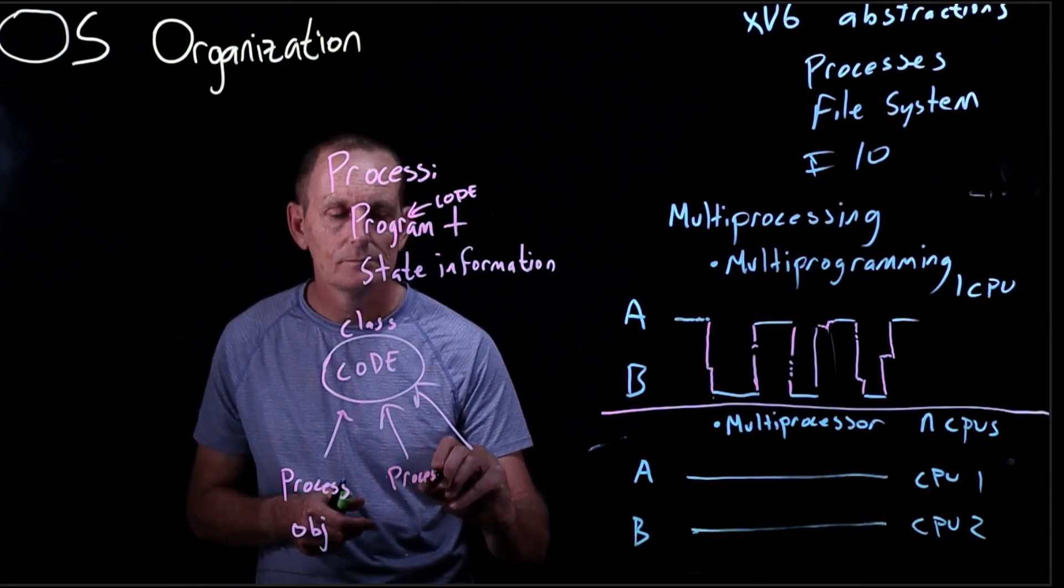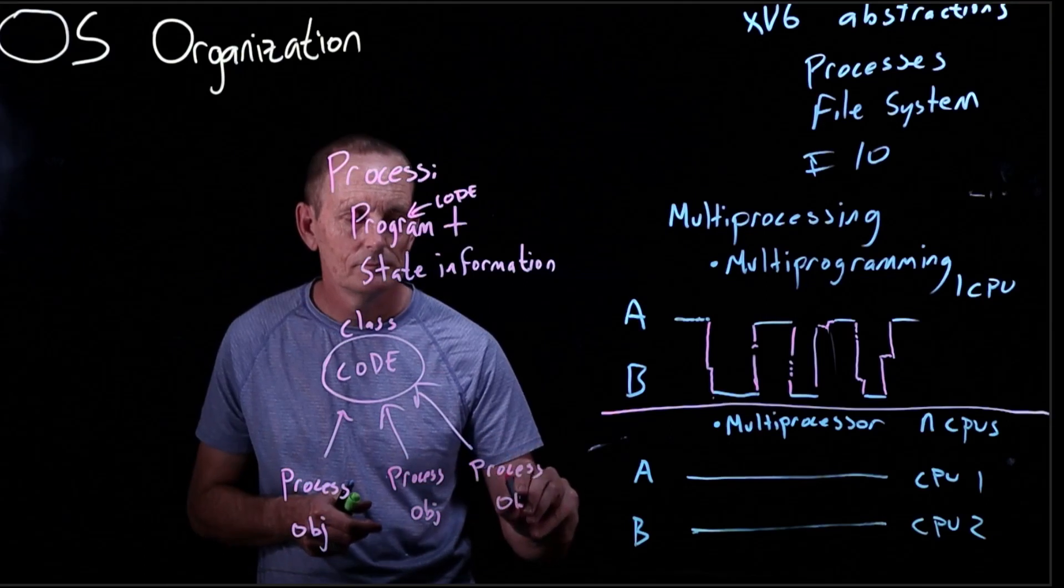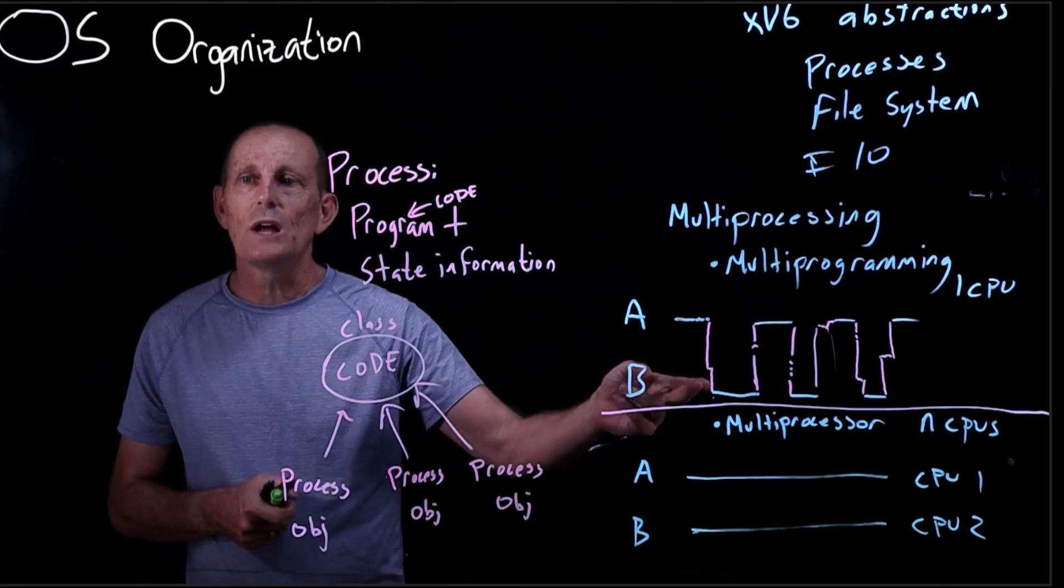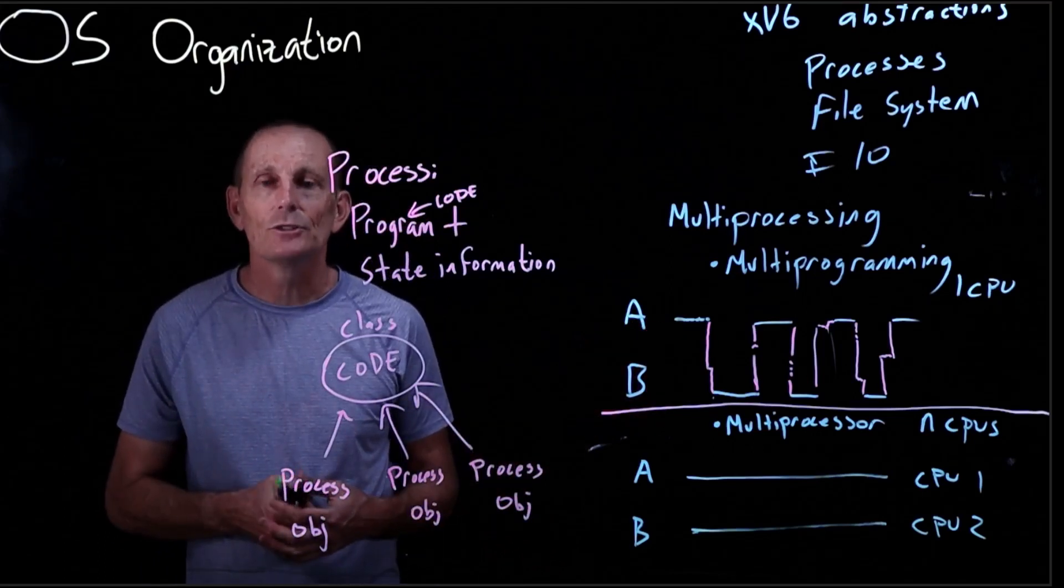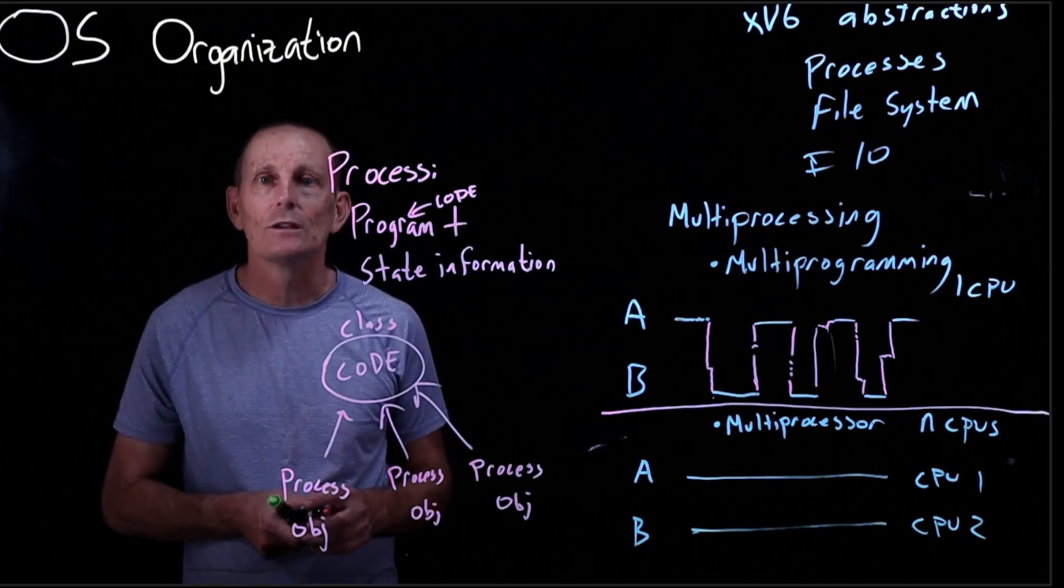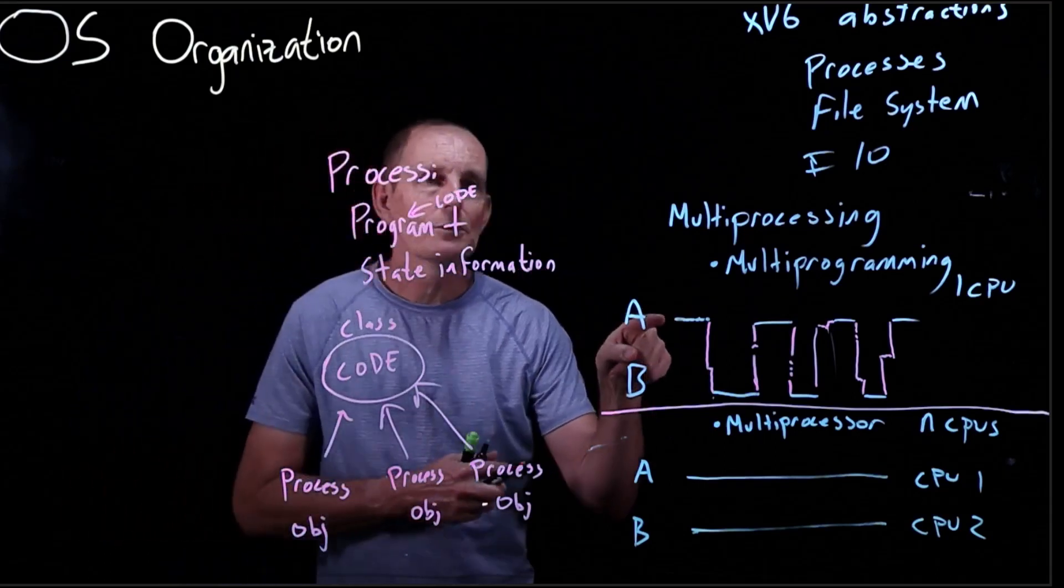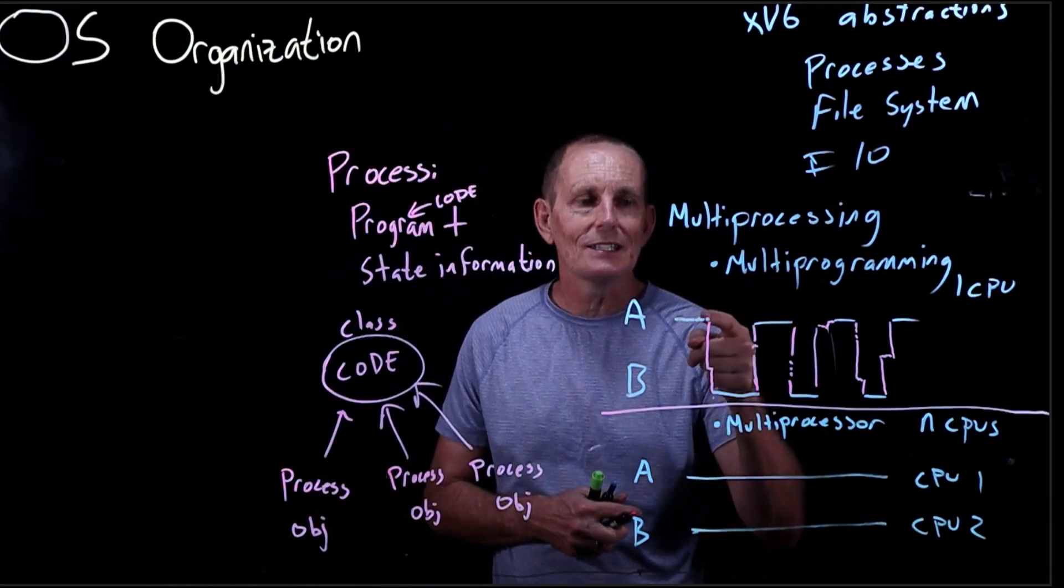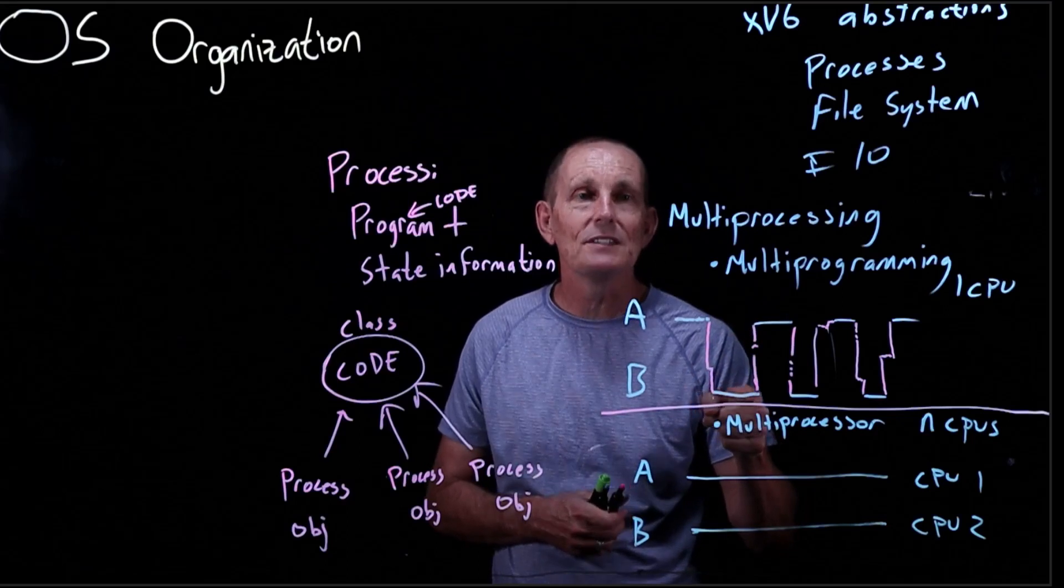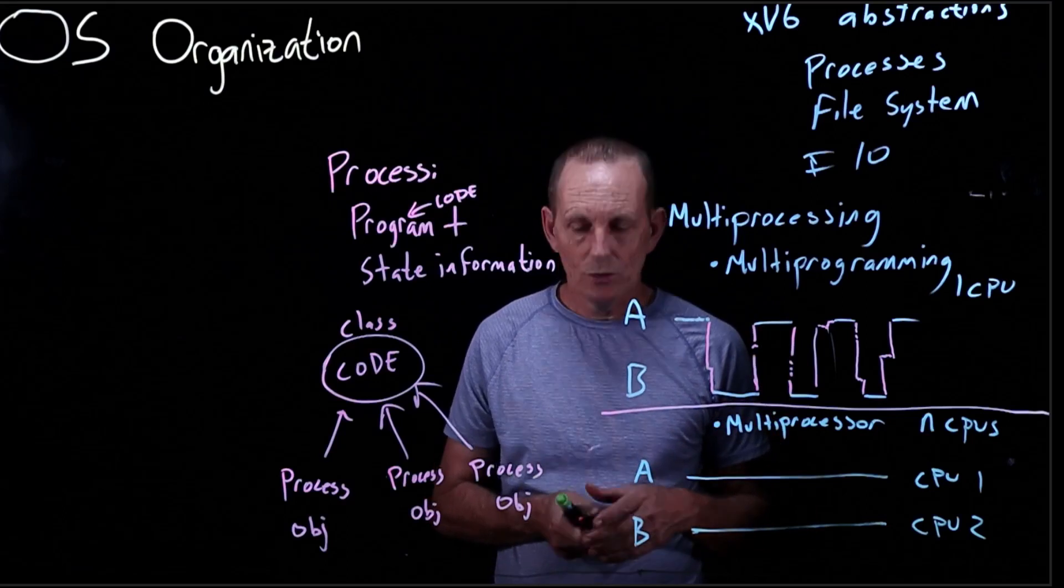We have this switching between processes that I mentioned. There is something to look at as a distinction in this switching. One possibility is A is aware when it switches, and A actually says at this time I am willing to give up the CPU right now. Then B takes it, and then B runs until B says I'm willing to give up the CPU. That's normally called a yield.